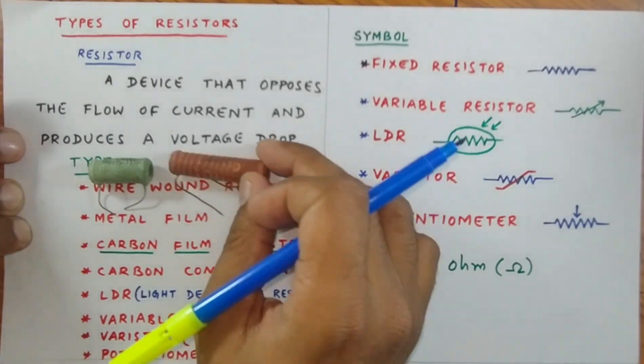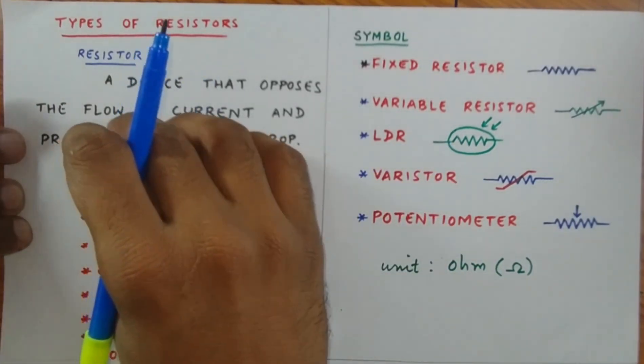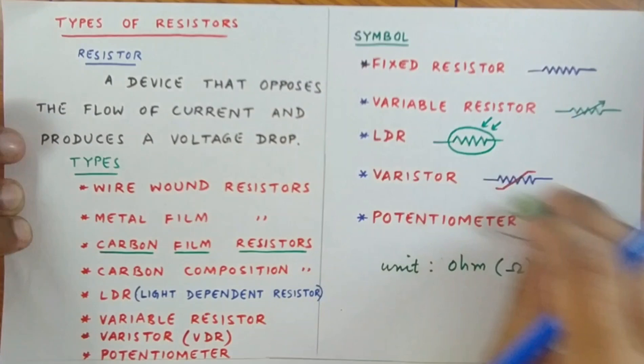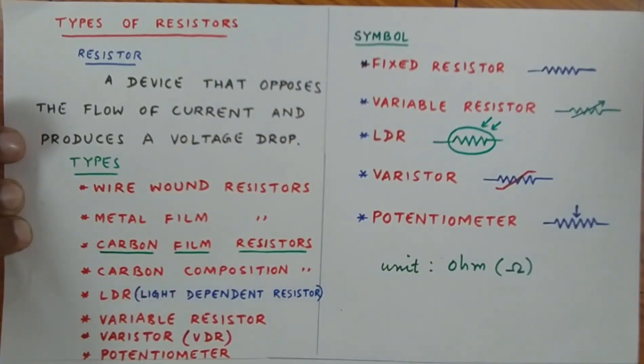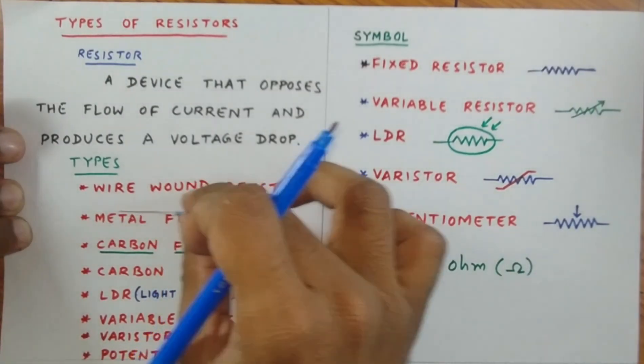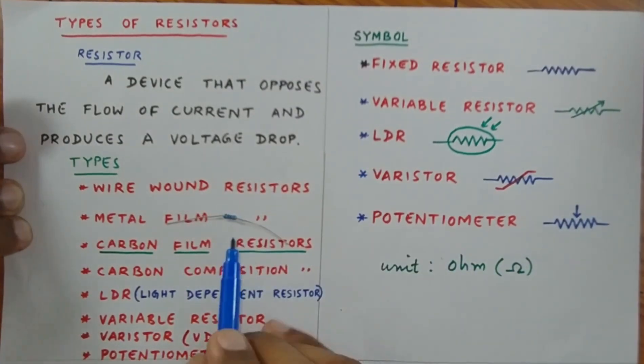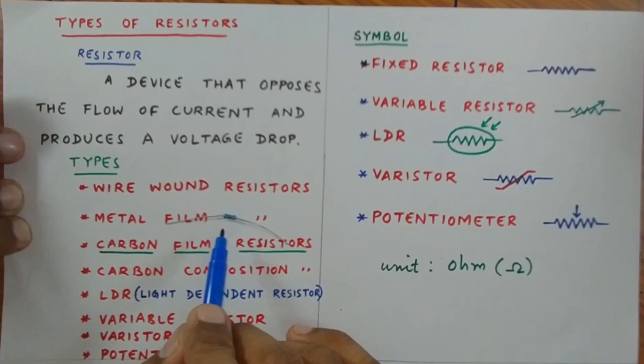Then we have metal film resistors. This one is a metal film resistor. The value is mentioned here and is shown with the help of these color rings. How to read them, I will show you in the next video, inshallah.